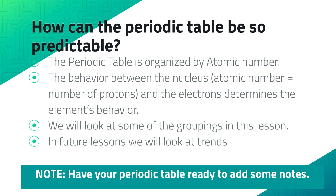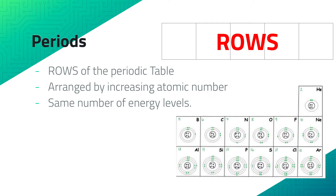In future lessons we will look at trends. So make sure you have the periodic table ready to add some notes to the one that you should have in a sheet protector or in your folder. If not, they are in the blue file folder in my classroom. The periods on the periodic table are the rows, arranged by increased atomic number, and they have the same number of energy levels. So boron has the same number of energy levels as fluorine, even though fluorine has more protons than boron.